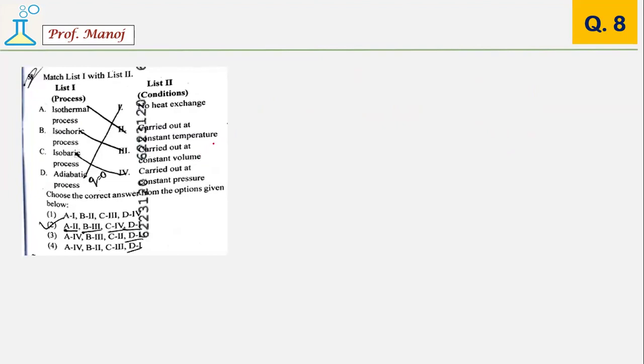Next comes a very simple thermodynamics question: isothermal, isochoric, isobaric, and adiabatic. I hope I don't have to discuss the answer. The answer is 2. Isothermal is carried at constant temperature, isochoric is at constant volume, isobaric is at constant pressure, and adiabatic means no heat exchange. A very simple question.